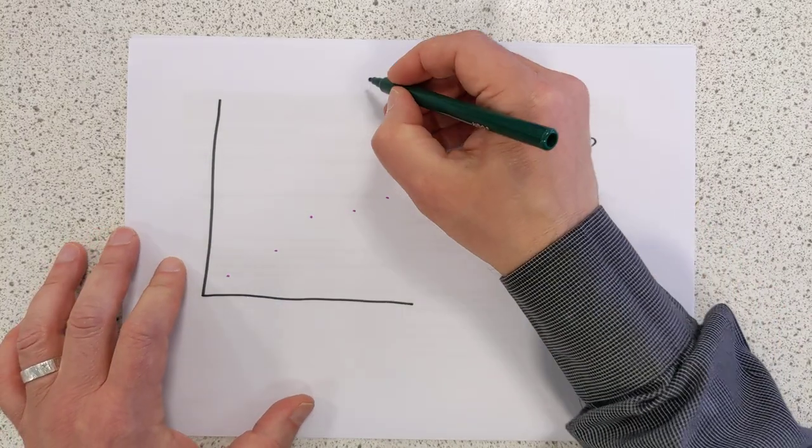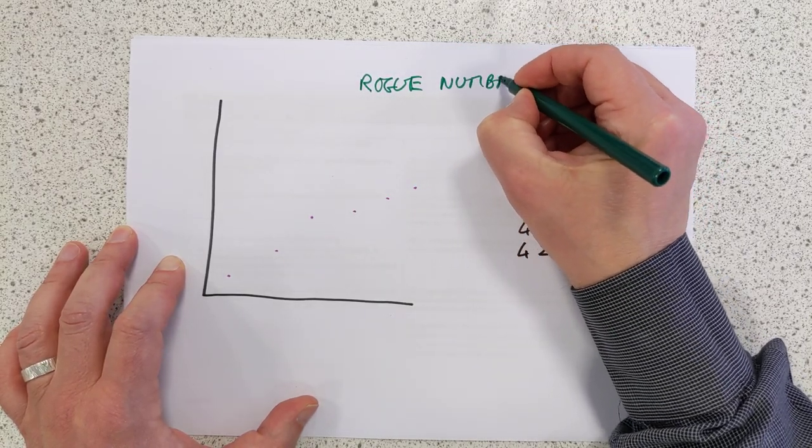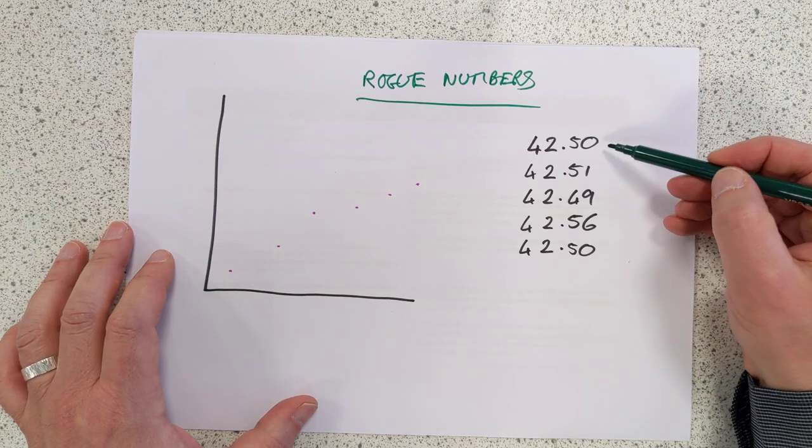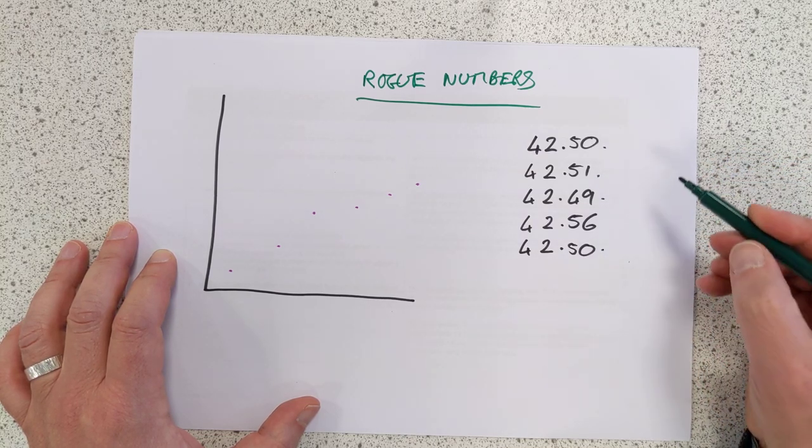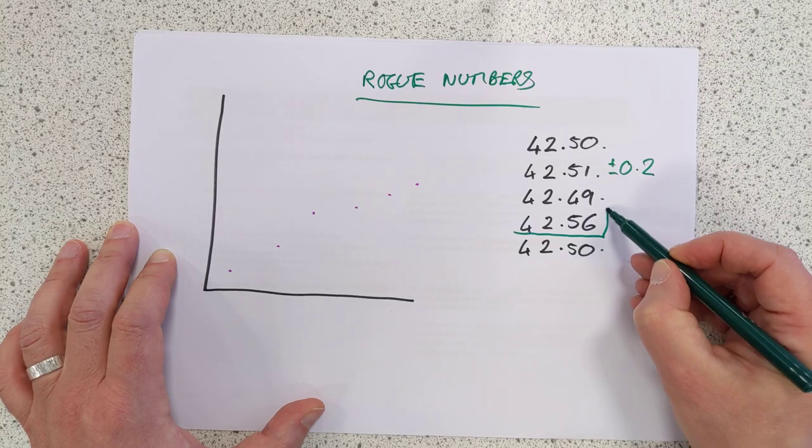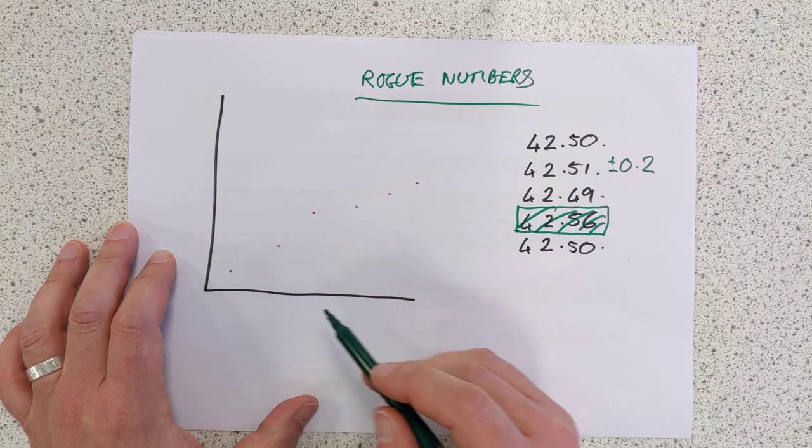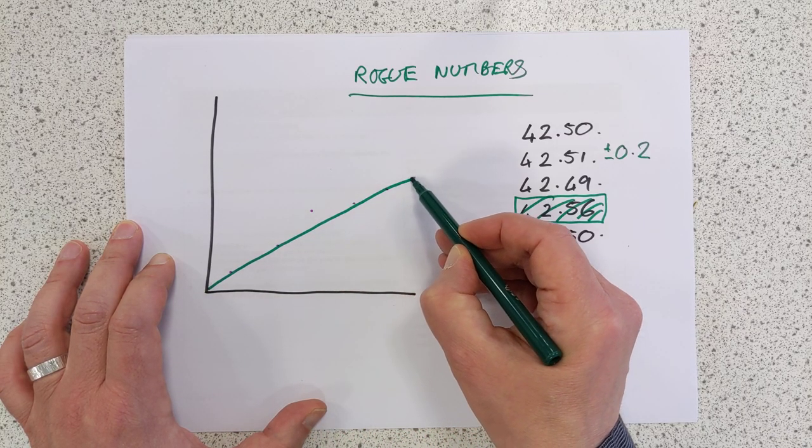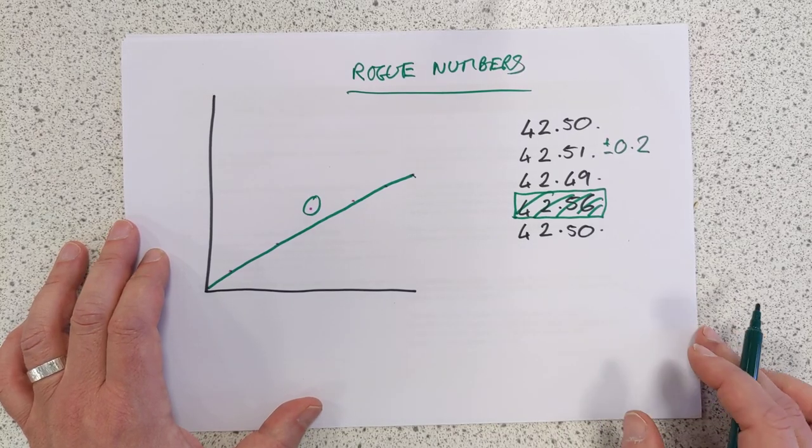And the last thing are rogue numbers. The SQA wants you to be able to spot rogue numbers. There's two different ways that I've seen them do this. If you have a look at these numbers here, they all look superficially very similar, but these ones here are all within 0.2 of each other, plus or minus 0.2. This one here, I suspect, is our rogue, so we would discard that. And similarly, you can see in this graph here. Don't shout at me, by the way, if there's any real scientists out there. I know you would just do a line of best fit, but let's keep the SQA happy. That would be discarded as a rogue point. We would not include it in our graph.